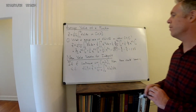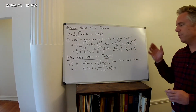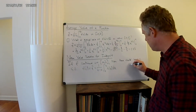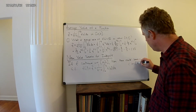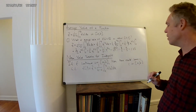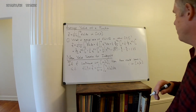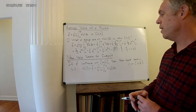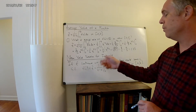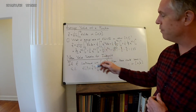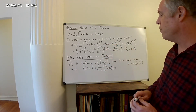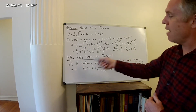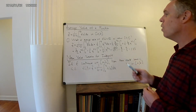The Mean Value Theorem for Integrals says: if you have some function f that's continuous on an interval, then there exists some c — and c is in the interval a, b — such that f of c equals the average value of the function, that is, f of c equals 1 over b minus a times the integral from a to b of f of x dx. There's some c such that f of c equals the average value of the function over this interval.